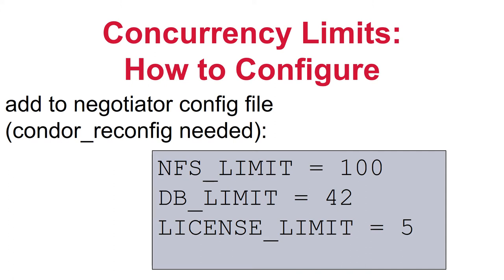Concurrency limits are easy to configure. First, pick a name — in this case NFS, DB, and license for three different limits. Then in the negotiator's Condor configuration, add: limit_name_LIMIT = value. A condor_reconfig picks up the new value. Here we set the NFS limit to 100, database to 42, and license to 5. This limits the system to 100 running NFS jobs, 42 database jobs, and 5 license jobs, regardless of which SchedD or submitter they came from.